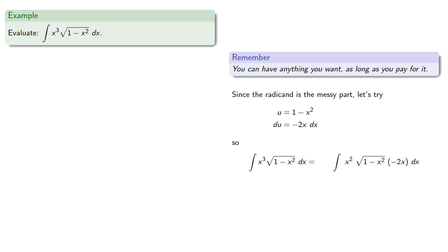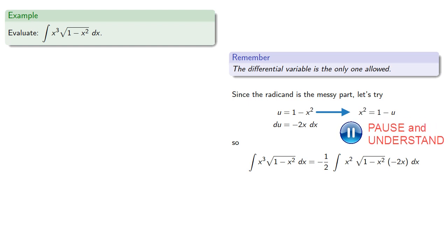And the negative 2 will pay for using a factor of negative 1 half, which we'll put out front of the integral. Now remember, the differential variable is the only one allowed. So we have to do something with this x squared. And our substitution allows us to solve for x squared as... And so we can replace...